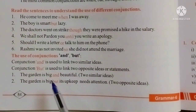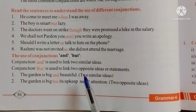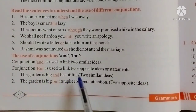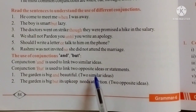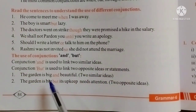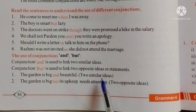The use of Conjunctions 'and' and 'but'. Conjunction 'and' is used to link two similar ideas. Conjunction 'but' is used to link two opposite ideas or statements.